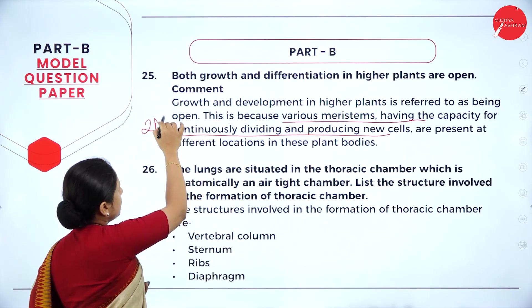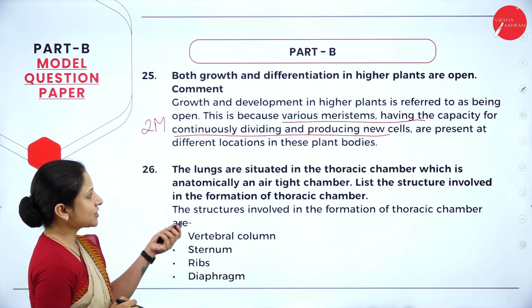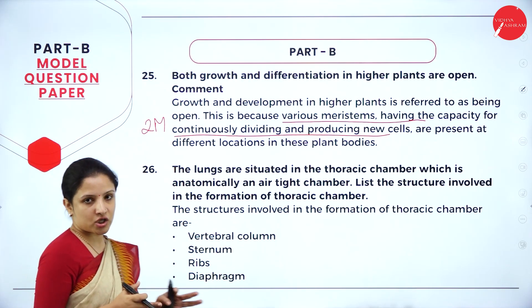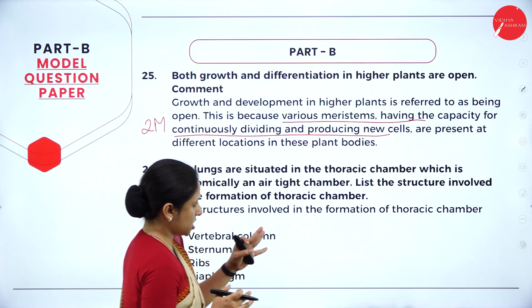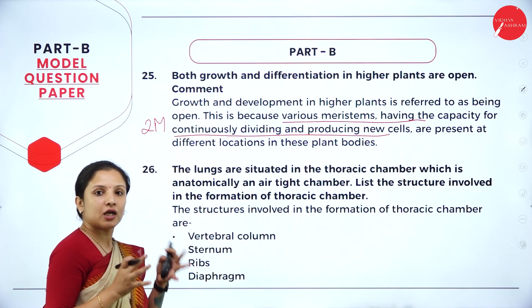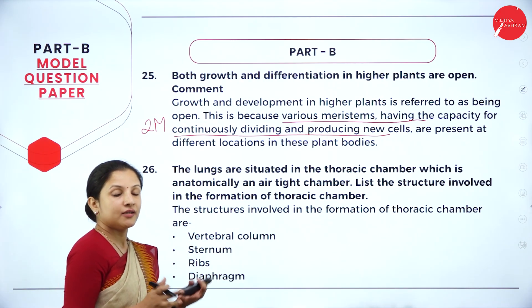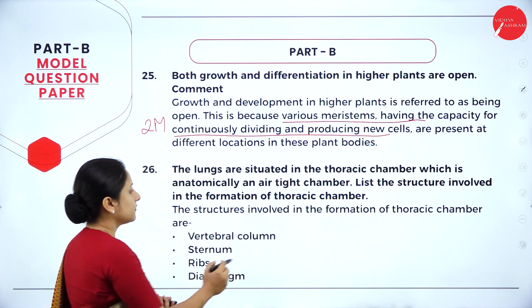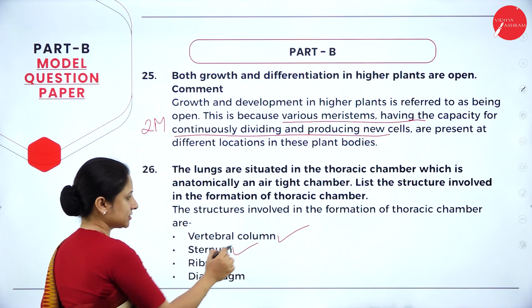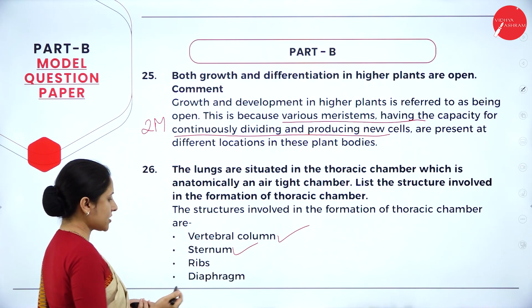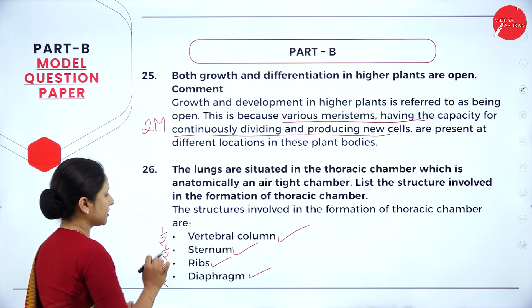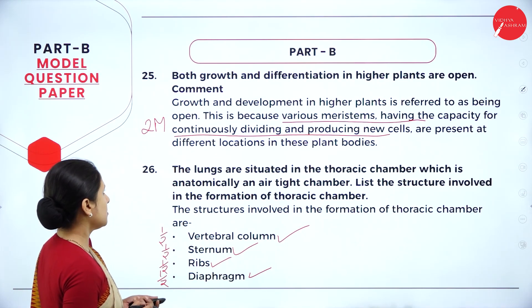Question 6: the lungs are situated in the thoracic chamber, which is an airtight chamber. Name the different structures involved in the formation of the thoracic chamber. These include the vertebral column, the sternum (to which ribs are attached), the ribs, and the diaphragm. Each structure carries half a mark, totalling 2 marks for all four.